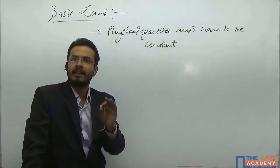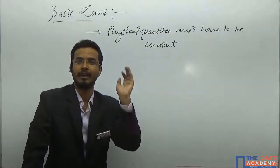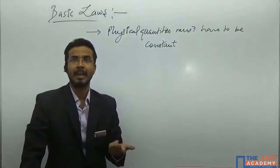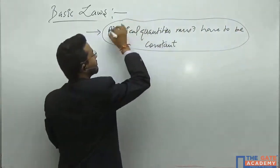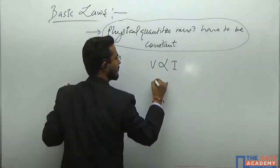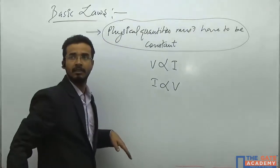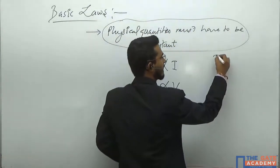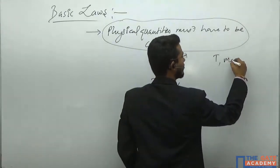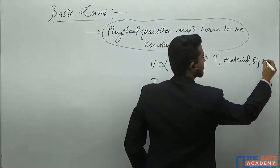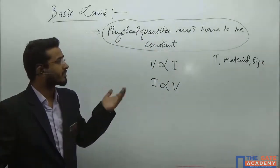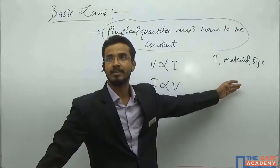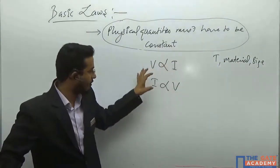Whenever all the physical quantities are constant, the current through any current carrying element will be proportional to the voltage applied across it. These two relations are valid only under this condition. The physical quantities involved are things like temperature, material, and size. You do not have freedom to change the temperature, the material, or the size. If these things are constant, then only voltage will be proportional to I, or I will be proportional to voltage.